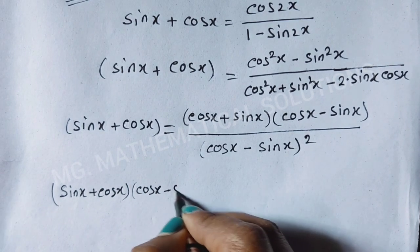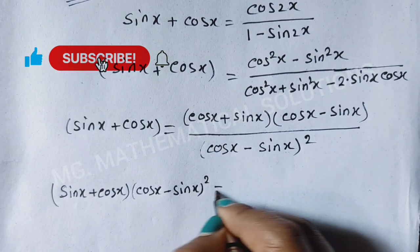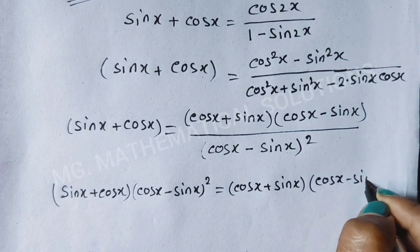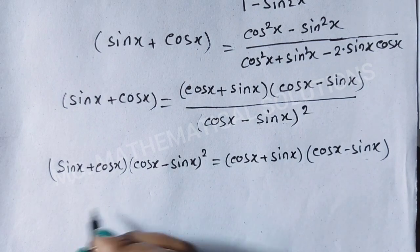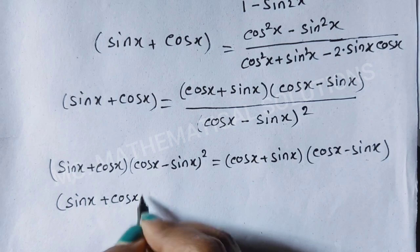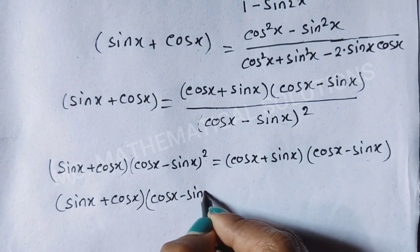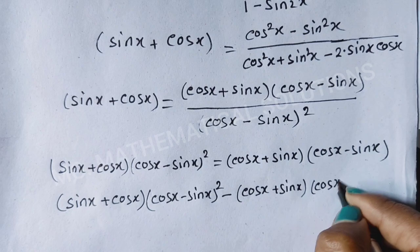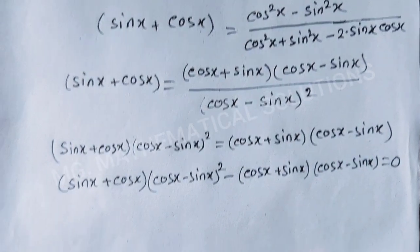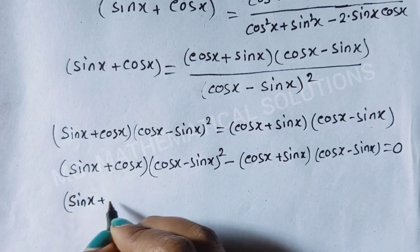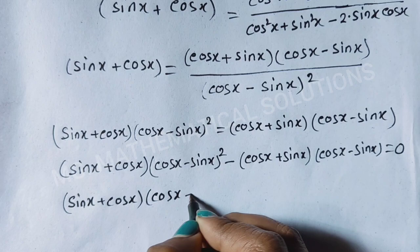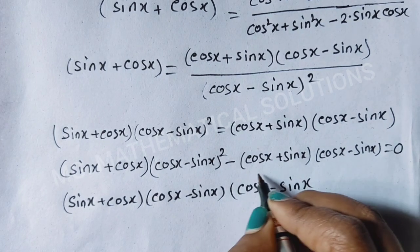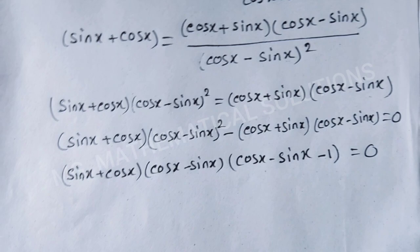Now we cross-multiply: (sin x + cos x)(cos x − sin x)² = (cos x + sin x)(cos x − sin x). Taking (sin x + cos x) common: (sin x + cos x)[(cos x − sin x) − 1] = 0.